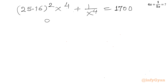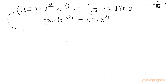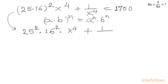Now I will use one property from exponents: (a times b) whole power n equals a power n times b power n. So we can write our equation as 25² times 16² times x⁴ plus 1 over x⁴ equals 1700.